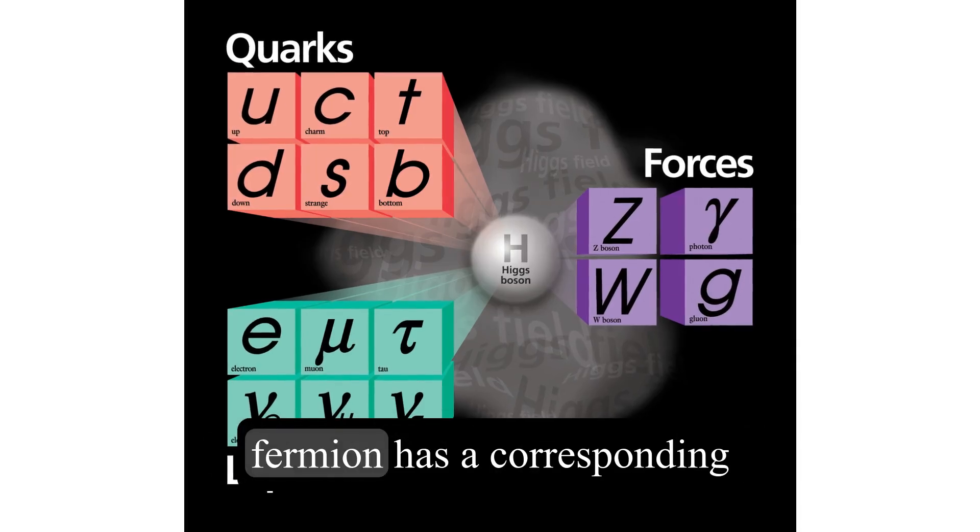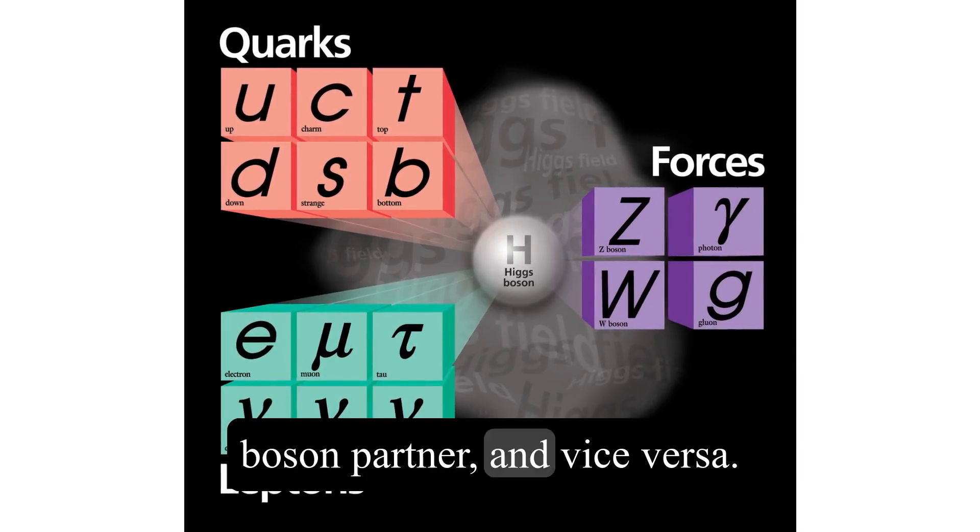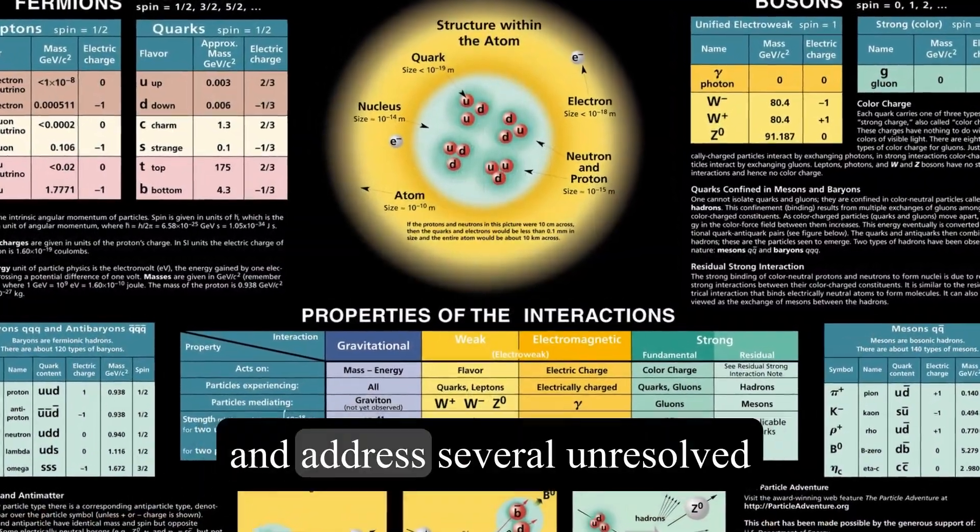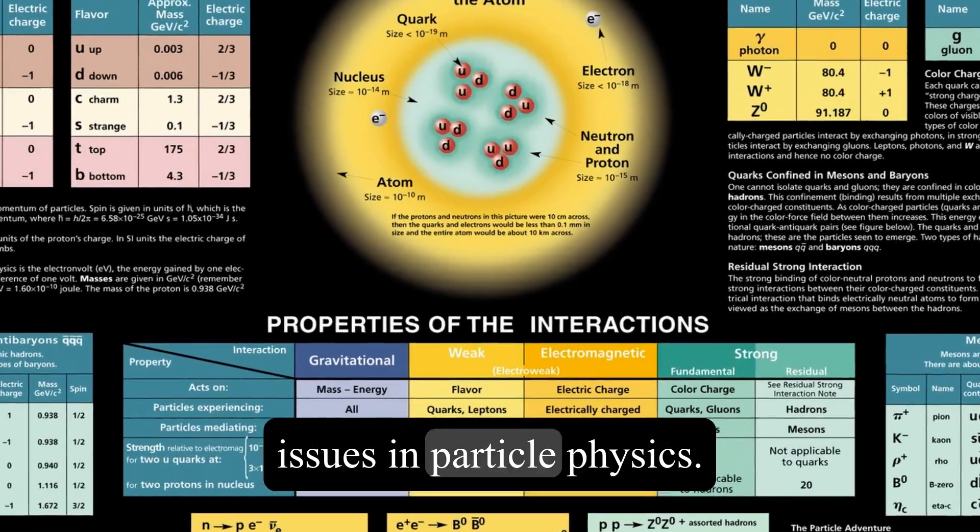Supersymmetry posits that every fermion has a corresponding boson partner, and vice versa. This symmetry could help unify the fundamental forces of nature and address several unresolved issues in particle physics.